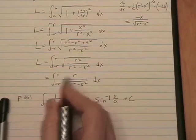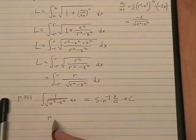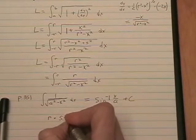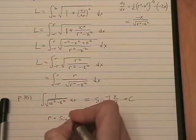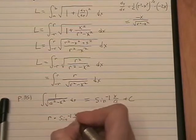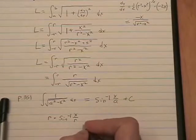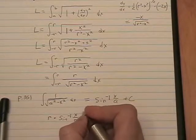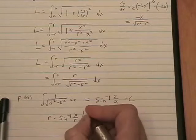So this antiderivative formula that we have will turn out for us to look like this: r that we factored out times the inverse sine of x over r, and then instead of plus c, we have limits of integration that we will throw in there.